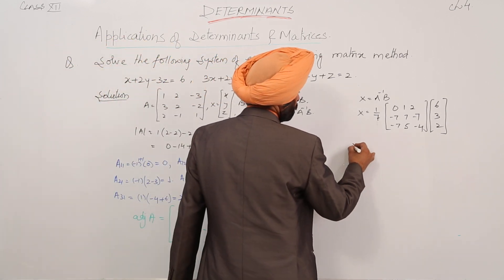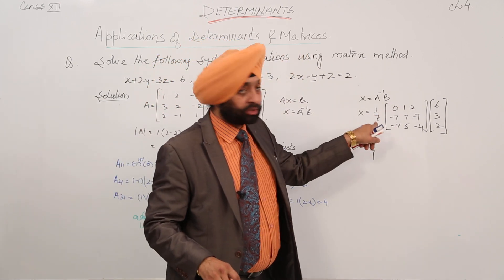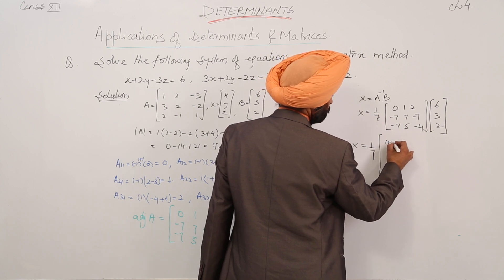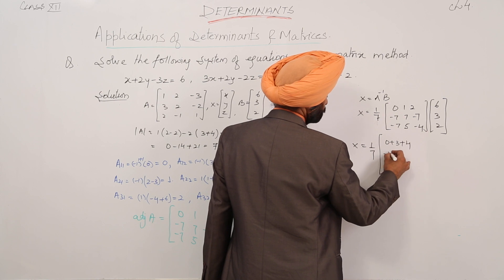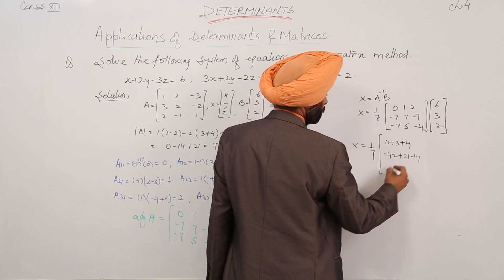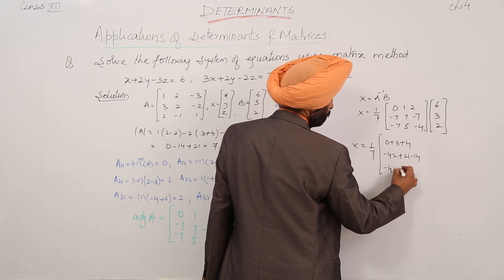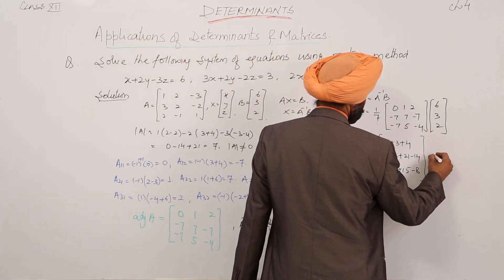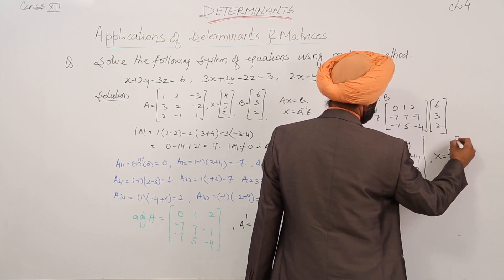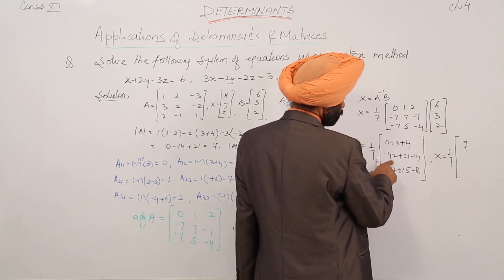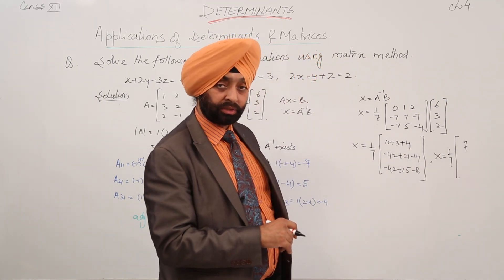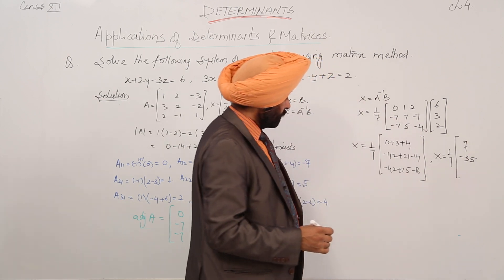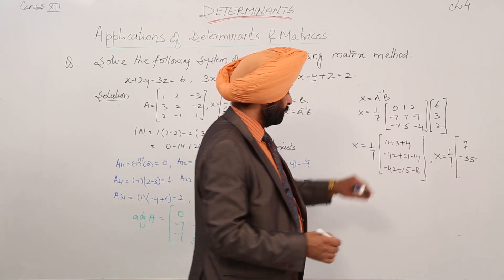Let's solve it. We are having x equal to 1 by 7. For the first row: 0 plus 3 plus 4. For the second row: minus 42 plus 21 minus 14. For the third row: minus 42 plus 15 minus 8. Simplifying: 3 plus 4 is 7; minus 42 minus 14 plus 21 gives minus 35; and minus 42 plus 15 minus 8 also gives minus 35.